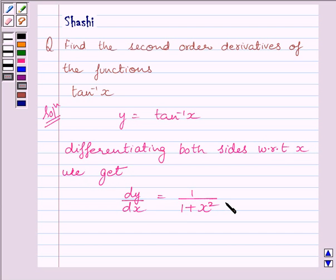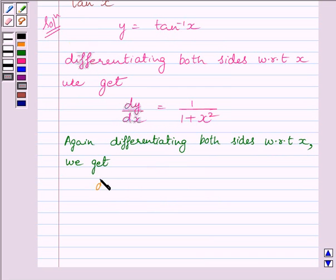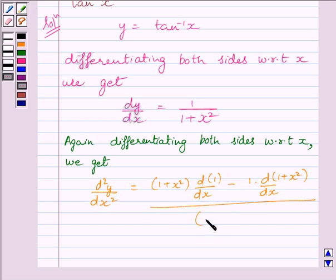Now, again differentiating both sides with respect to x, we get d square y upon dx square is equal to... Here we will apply the quotient rule to find the derivative. So, we will write 1 plus x square multiplied by derivative of 1 minus 1 multiplied by derivative of 1 plus x square upon 1 plus x square whole square.